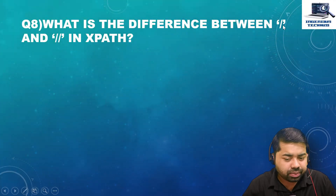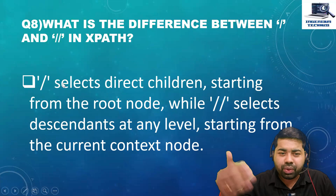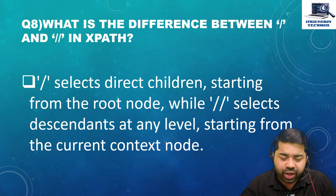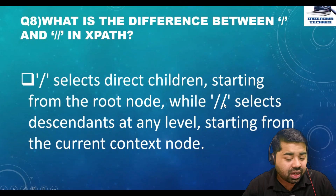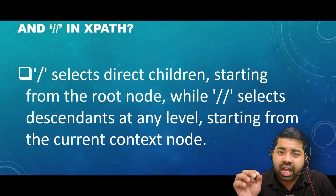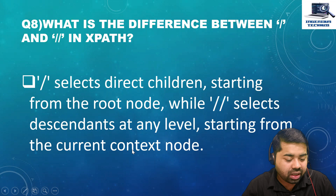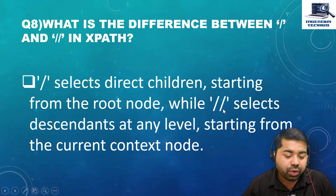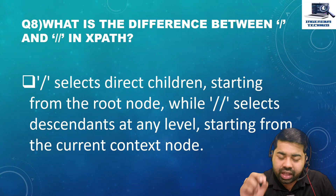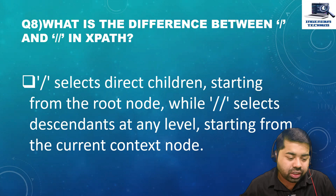What is the difference between single forward slash and double forward slash in XPath? Single forward slash selects direct children — if you want to go to a direct child node, use single slash. Double forward slash is used to find any element on the web page at any level, starting from the current context node. When writing relative XPath, double slash can find elements anywhere in the HTML document.